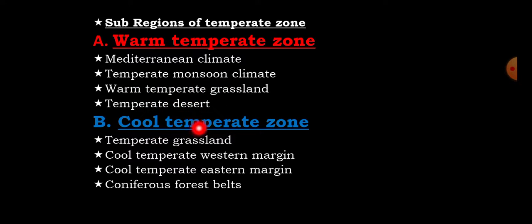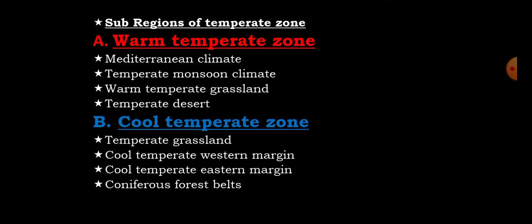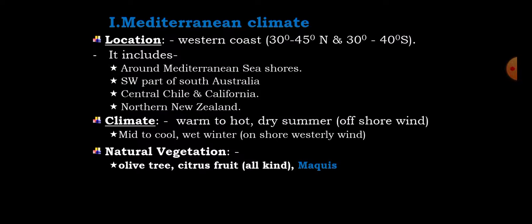Cool temperate zones include temperate grassland, cool temperate western margin, cool temperate eastern margin, and coniferous forest belt. So the temperate zone includes both warm temperate and cool temperate regions.